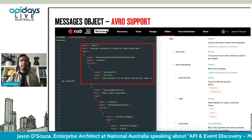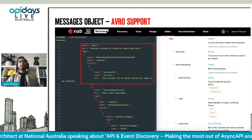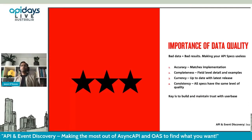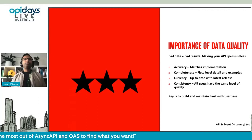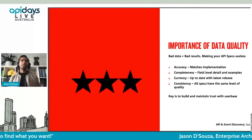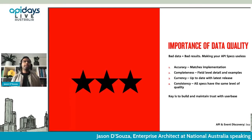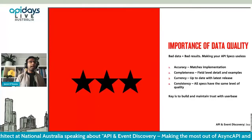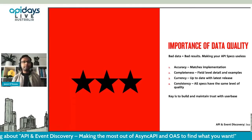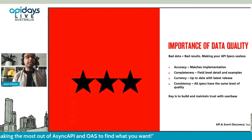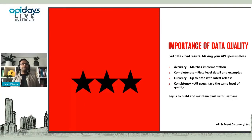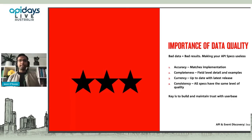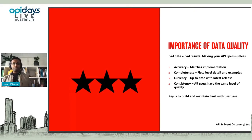With only a couple of minutes left, let me talk about data quality. This is something we learned pretty early on — bad data equals bad results. It just makes your API specs useless. There are four things in terms of data quality: accuracy — make sure what's documented matches the implementation; completeness — just having an operation with no data or fields without examples is not good enough; currency — it has to match what's actually in production or what's in the environment you're looking at; and consistency — having three or four specs of very high quality but having the other hundred at poor quality doesn't build the trust you need with your user base.